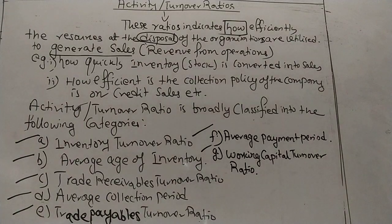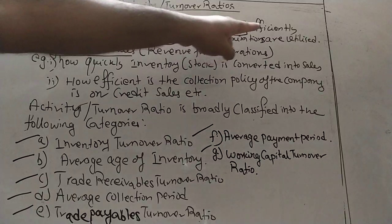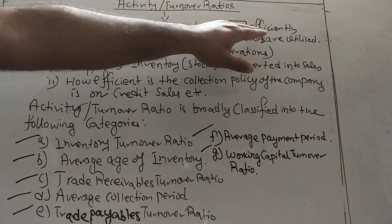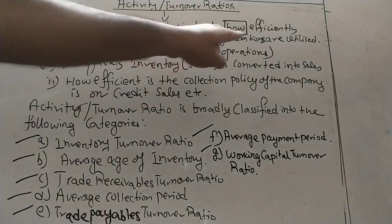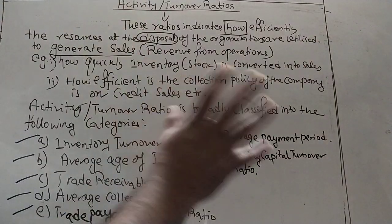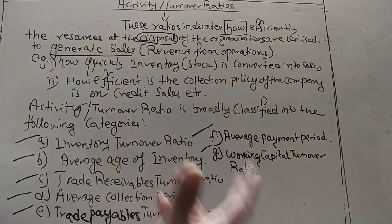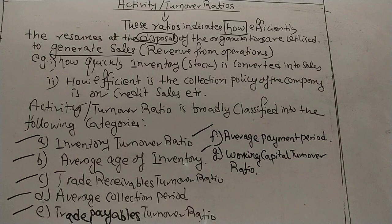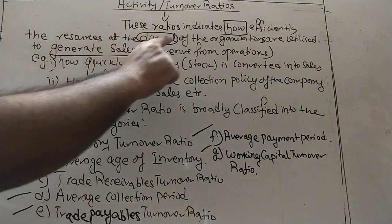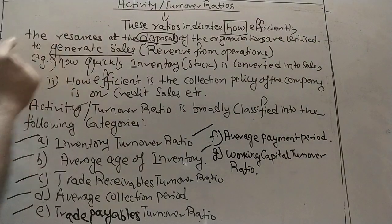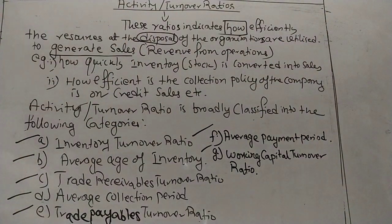These ratios indicate how efficiently — meaning how properly, with competitive spirit — the resources at the disposal of the organization are utilized. Whatever resources business organizations have, how efficiently can they generate sales with those resources? This is why we calculate turnover ratios: these ratios indicate how efficiently the resources at the disposal of the organizations are utilized to generate sales.